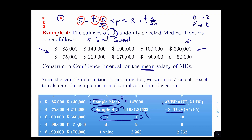We'll find x-bar using the AVERAGE command, which comes out to 147,000, and the sample standard deviation S comes out to about 91,000. N is 10. For the T value, we use T dot inverse dot two tail with 1 minus the confidence level. The confidence level isn't given, so we assume 95% — the industry standard. If a confidence level isn't mentioned, always assume 95%.